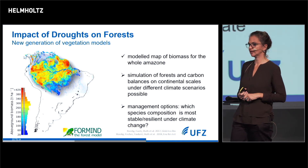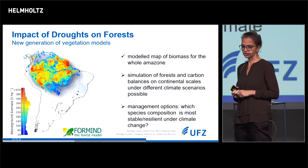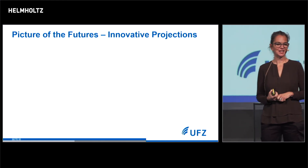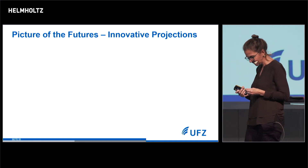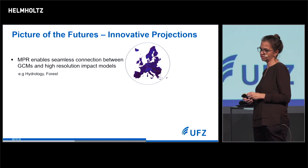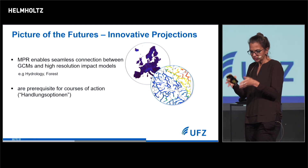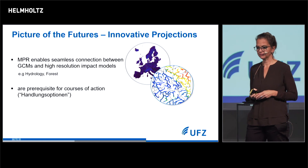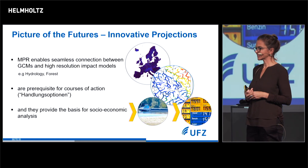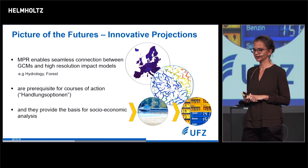Going back to Germany, we will also use the model to develop different management options and explore which tree species compositions are most stable or resilient under climate change conditions. I hope I have convinced you that this parameterization method enables a seamless connection between global and regional climate models and impact models — demonstrated for hydrology and forests. This provides the basis for further socioeconomic analysis, and I am happy that our research can contribute to finding the best responses to the challenge of global change. Thank you.